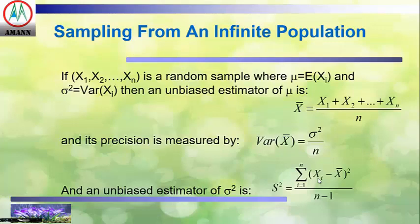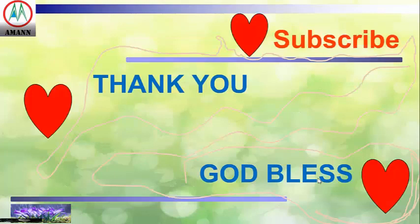For sampling from an infinite population: if X1, X2, X3, ... Xn is a random sample where mu is the expected value of X and sigma-squared is the variance of X, then an unbiased estimator of mu is x-bar equals (X1 plus X2 plus ... plus Xn) divided by n. Its precision is measured by the variance of the mean, which equals the population variance over n. An unbiased estimator of sigma-squared is s-squared, equal to the summation of (X minus x-bar) squared over n minus 1. Thank you and God bless.